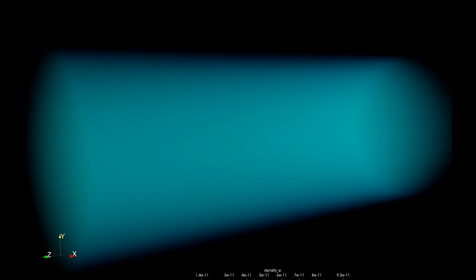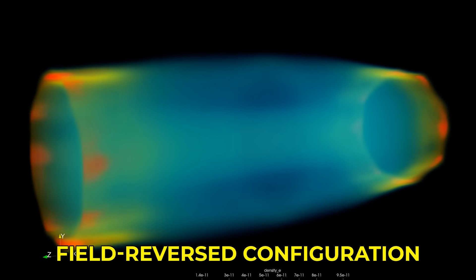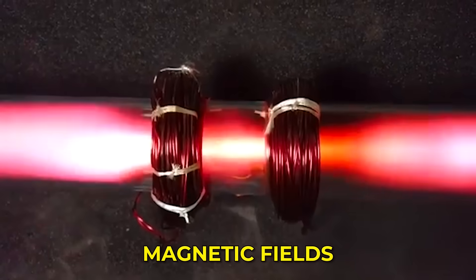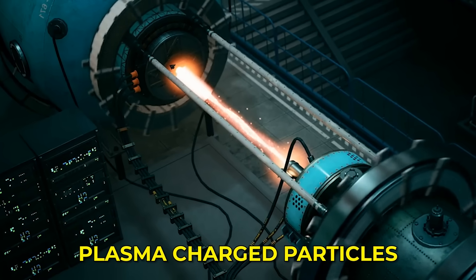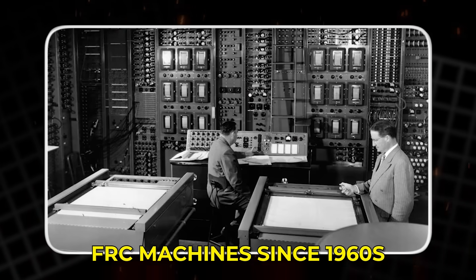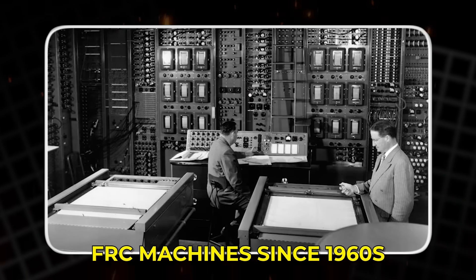It is based on what is known as a Field Reversed Configuration, or FRC, a design that uses magnetic fields to compress and confine a plasma of charged particles. Scientists have been building and testing FRC machines since the 1960s.